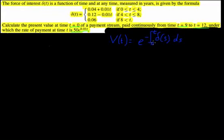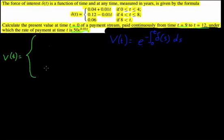I've written down what v(t) equals — it's e to the negative integral from 0 to t of δ(s) ds. I'm going to use t for everything. We're going to work out what v(t) is for all the pieces, because we'll eventually need v(t) between time t equals 9 and t equals 12 in order to solve this problem.